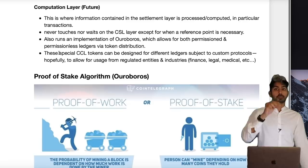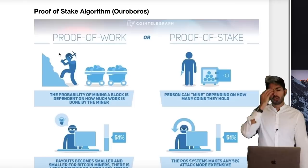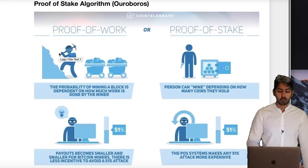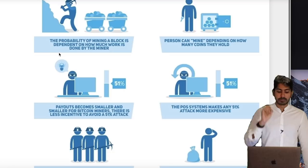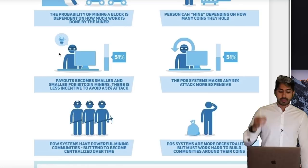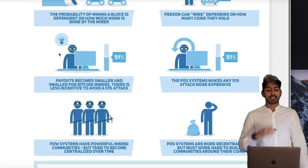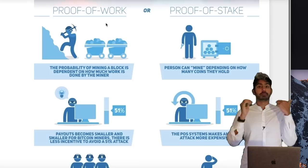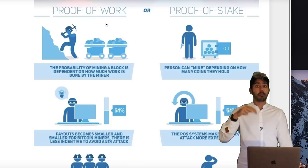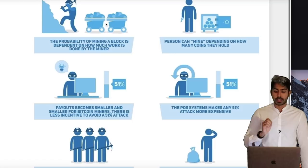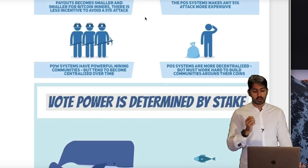Let me talk about Ouroboros, their consensus algorithm. With proof-of-work, the probability of mining a block depends on how much computational work a miner does. Payouts become smaller and smaller for Bitcoin miners, there's less incentive to avoid a 51% attack, and these PoW systems become powerful mining communities that tend to become centralized. Proof-of-stake instead makes it about how much money — how much stake — you have in the network. A person can mine depending on how many coins they hold, and a PoS system makes any 51% attack more expensive.